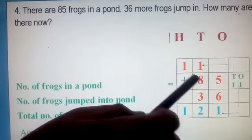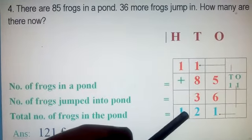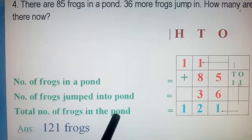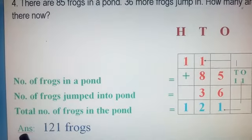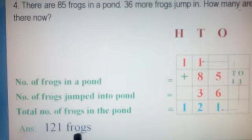Now what will you write? You have to bring this 1 down, isn't it? Now what is the answer? Total number of frogs in the pond is 121. The final answer is 121 frogs.